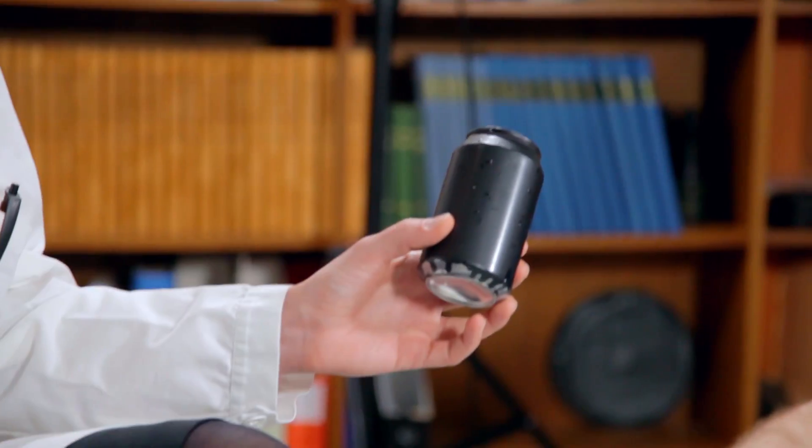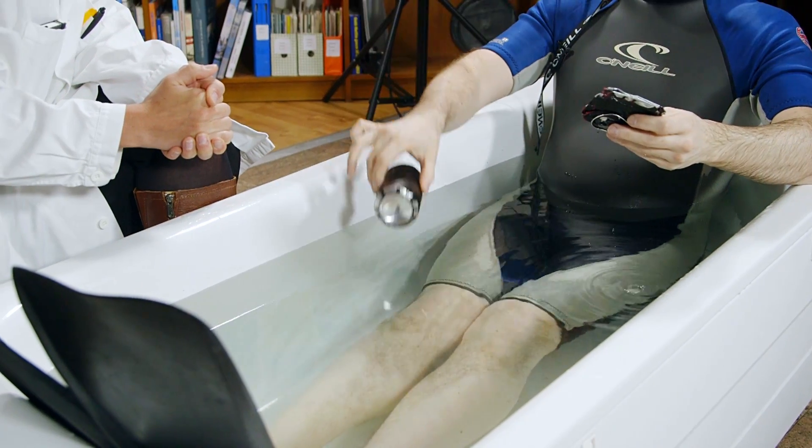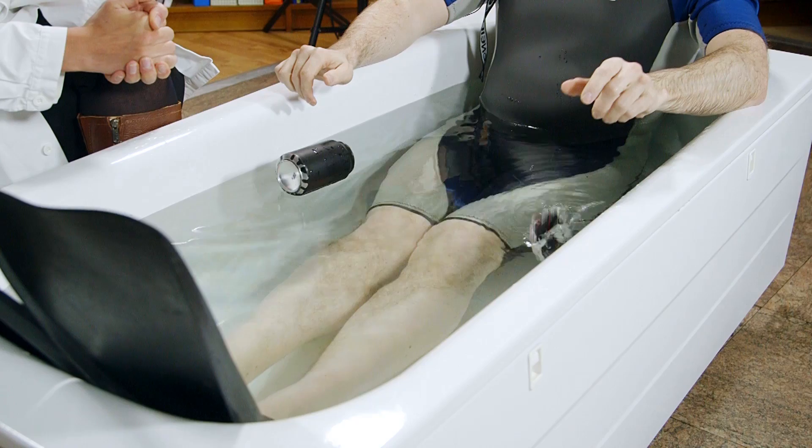No, I still don't understand. Here you have an empty can, and here you have a crushed can. And these are both made of metal, like ships. And they both have the same mass. Oh, so this one floats? And this one sinks?